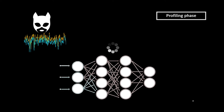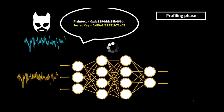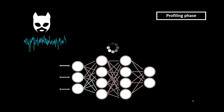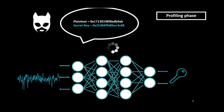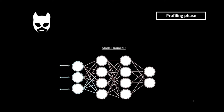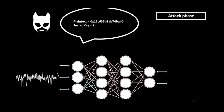First, during the profiling phase, the adversary trains a network to predict the correct sensitive information she knows, based on the physical traces generated previously. Once this phase is performed, the adversary can predict the intermediate variable on a similar target device containing a secret she wishes to retrieve. Then, during the attack phase, the adversary generates a new set of physical traces from the target device and computes the score related to each hypothesis.